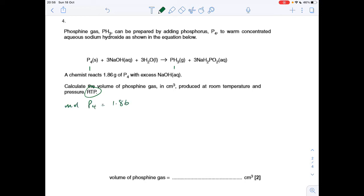1.86 divided by 124, that's 0.015. The moles of PH3 that will form is the same, 0.015, and the volume at RTP is going to be moles, 0.015 times 24,000, because we need it in cm cubed. That's 360.